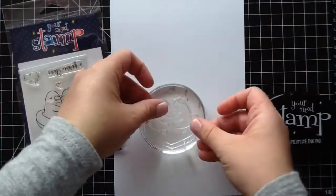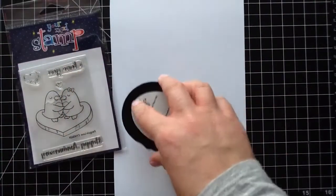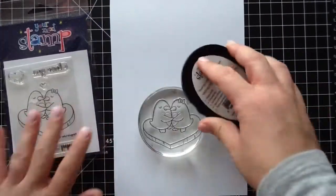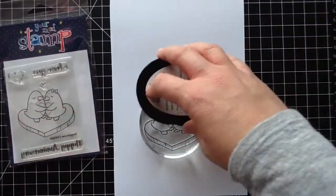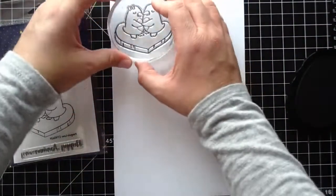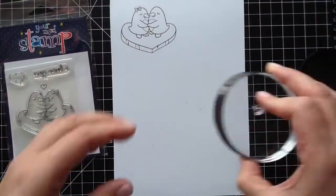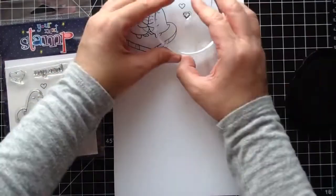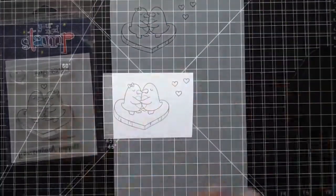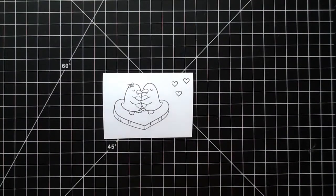Let's get started. I'm going to begin by stamping out my little image using Your Next Stamp Black Olive ink and Recollection 65 pound cardstock. I'm stamping this out and then the little heart. I'm going to stamp out three of them. I just wanted to have those cute little hearts surrounding the little penguins.